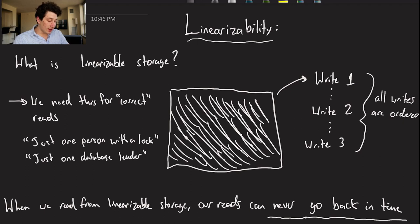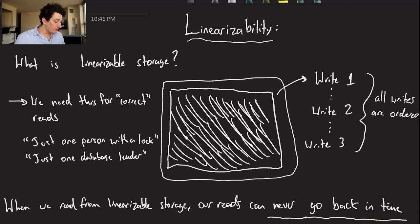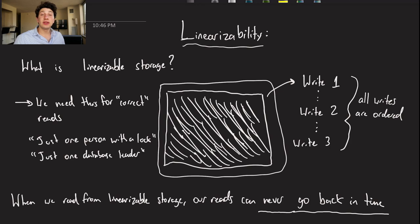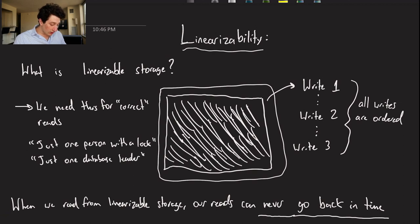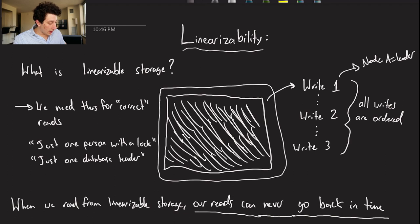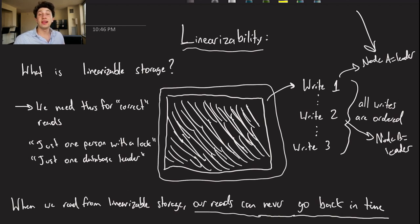Linearizable storage is this kind of black box database system where it is both fault tolerant and all of the writes are ordered. If we know the order of the writes, we can make sure that our reads never go back in time. If write one says node A is leader and then I read write two saying node B is leader, there should be absolutely no possibility that I later read that node A is leader, or else our storage is not linearizable — I just went back in time and our invariants have been completely messed up.